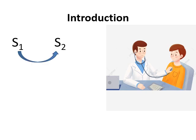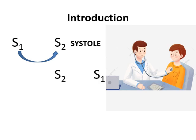The phase of the cardiac cycle between first heart sound and second heart sound is systole, and between second heart sound and first heart sound is diastole. This is what we are checking — how well the patient's heart is functioning — by checking the first heart sound and second heart sound.